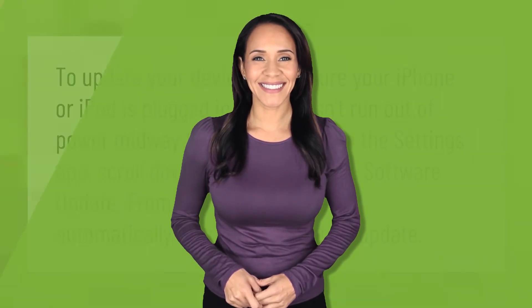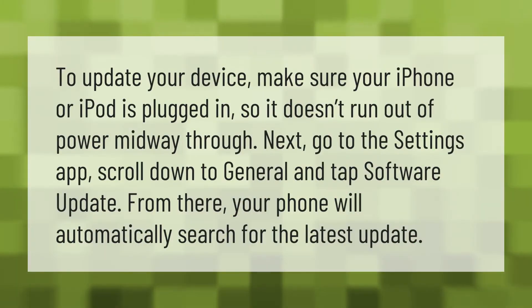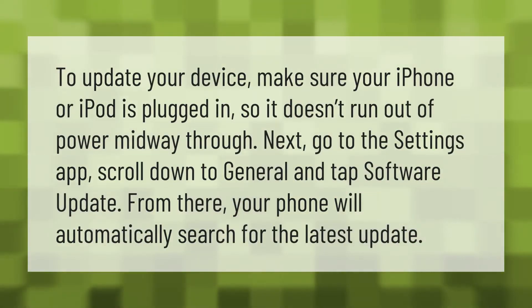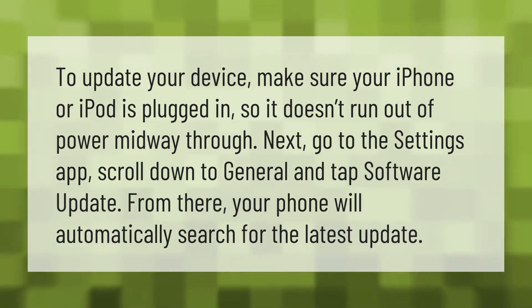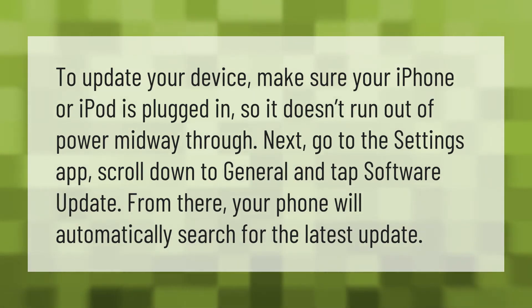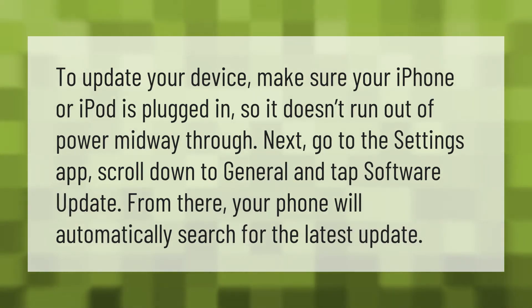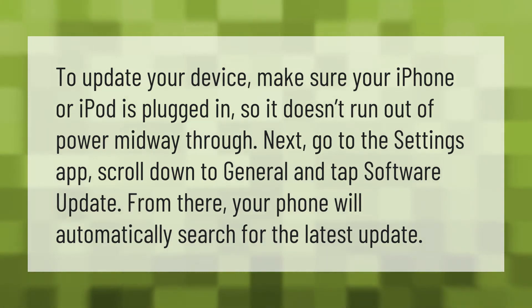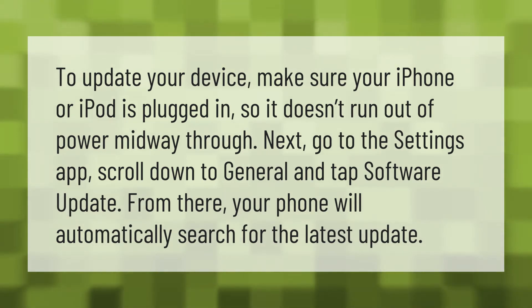To update your device, make sure your iPhone or iPod is plugged in so it doesn't run out of power midway through. Next, go to the Settings app, scroll down to General, and tap Software Update. From there, your phone will automatically search for the latest update.